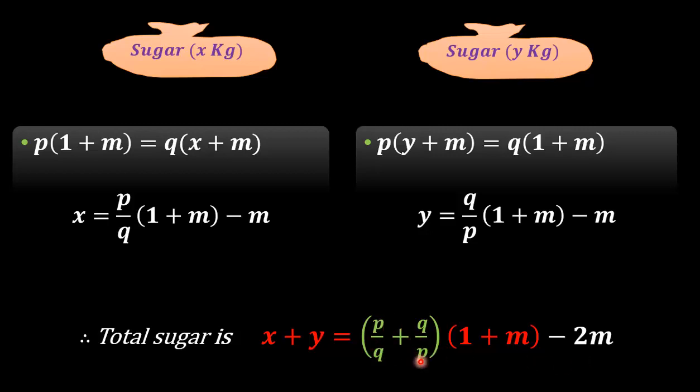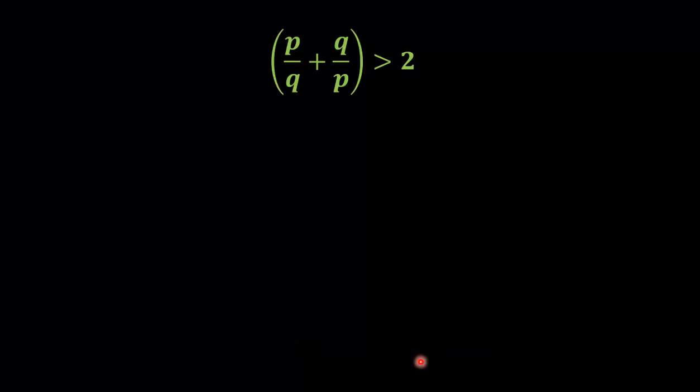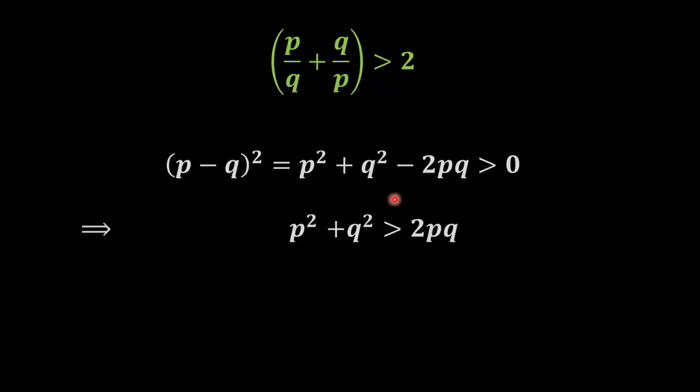It is pretty simple. If you take the square of p minus q, which is a positive quantity, we will get that p² + q² - 2pq is greater than 0. That is, p² + q² is greater than 2pq. On dividing both sides by p into q, we have p/q + q/p is greater than 2.